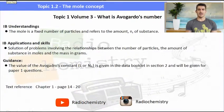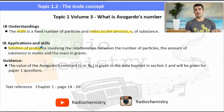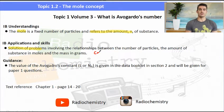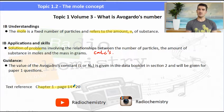The IB understandings and applications are: the mole is a fixed number of particles and refers to an amount of substance. We need to look at the solutions of some problems, so we need a calculator and a data book for these videos. The text reference is pages 14 to 20, check it out.